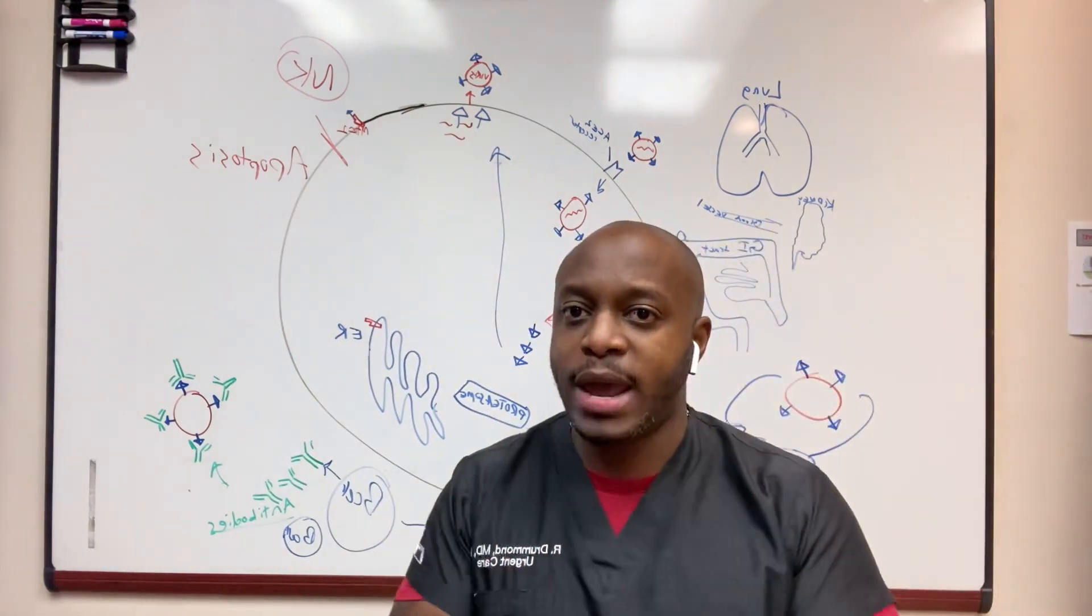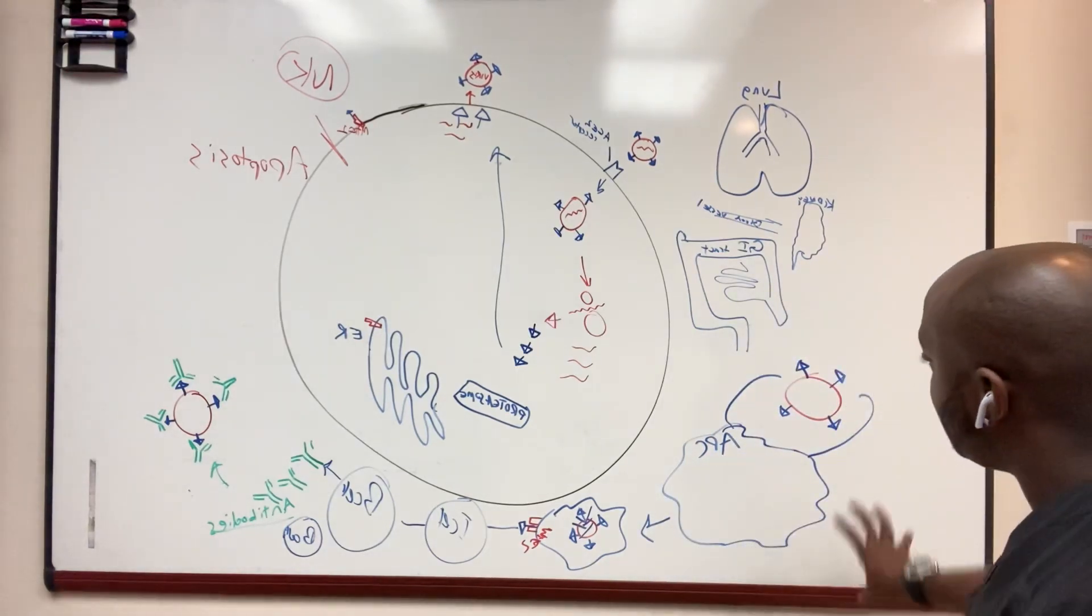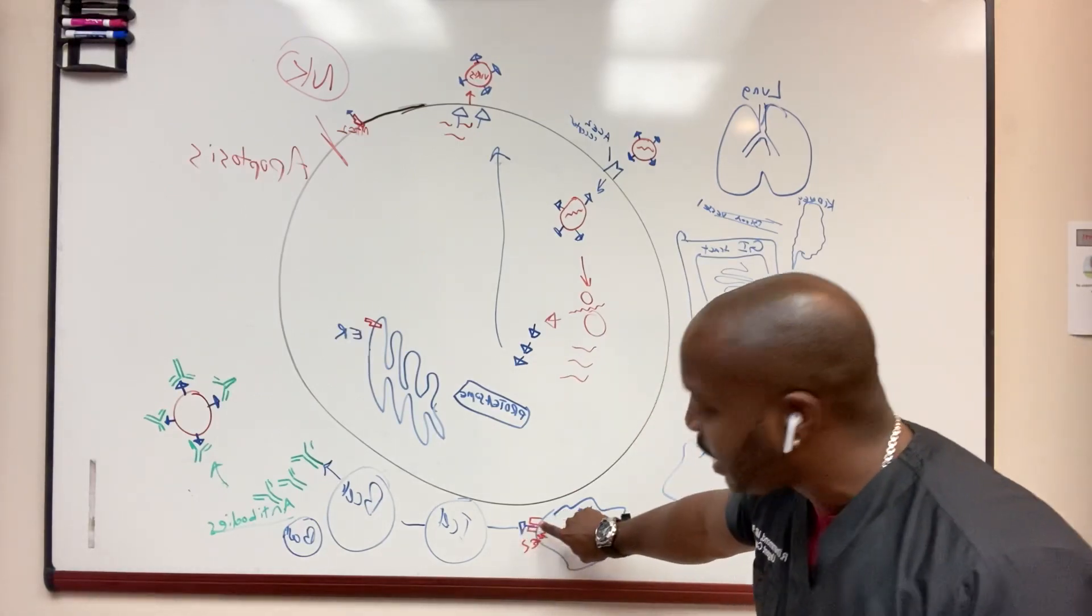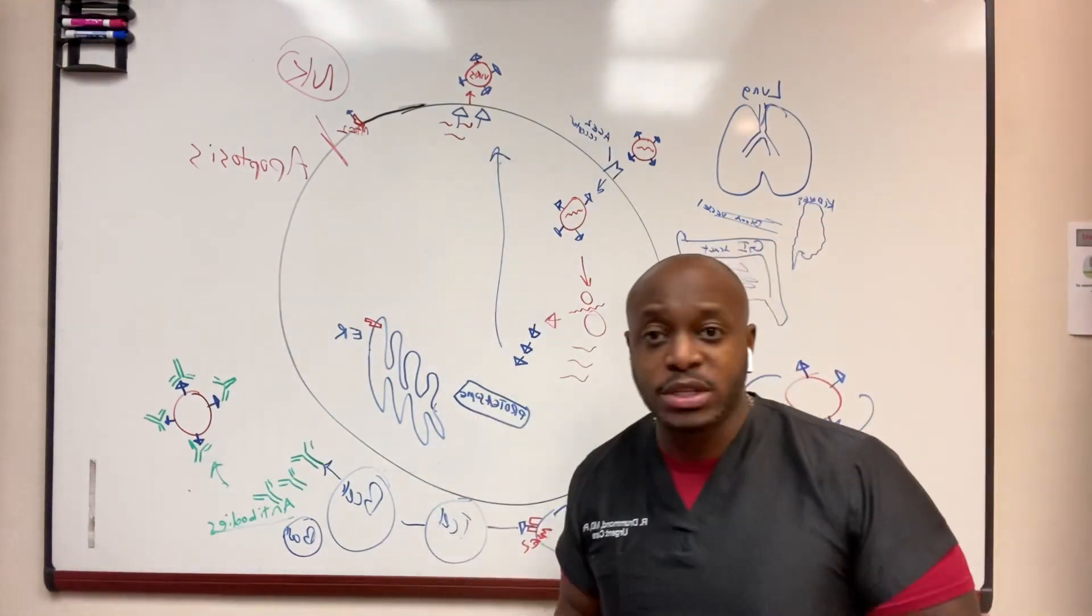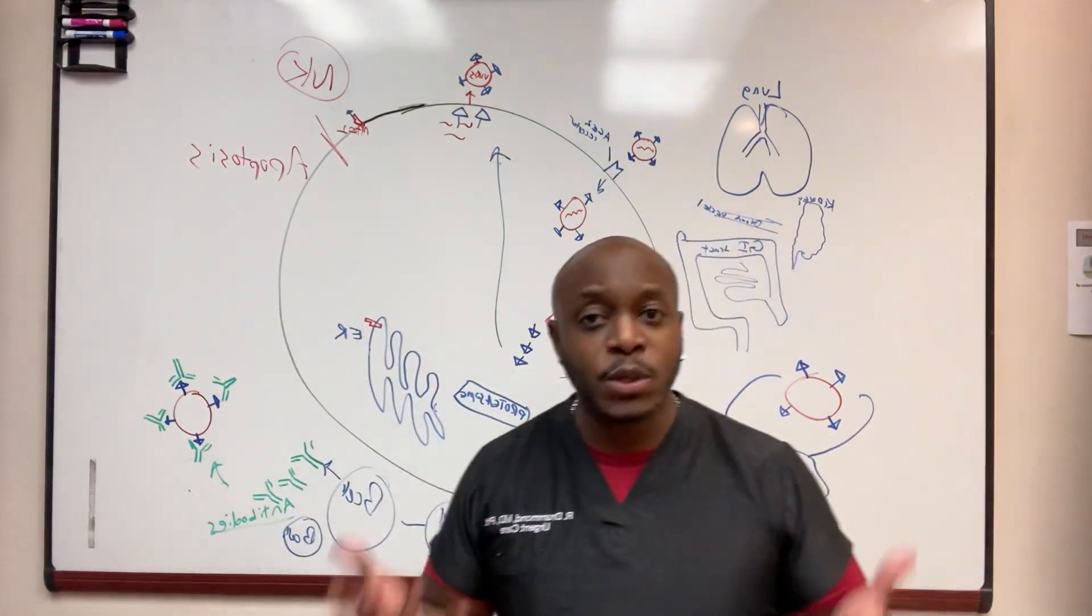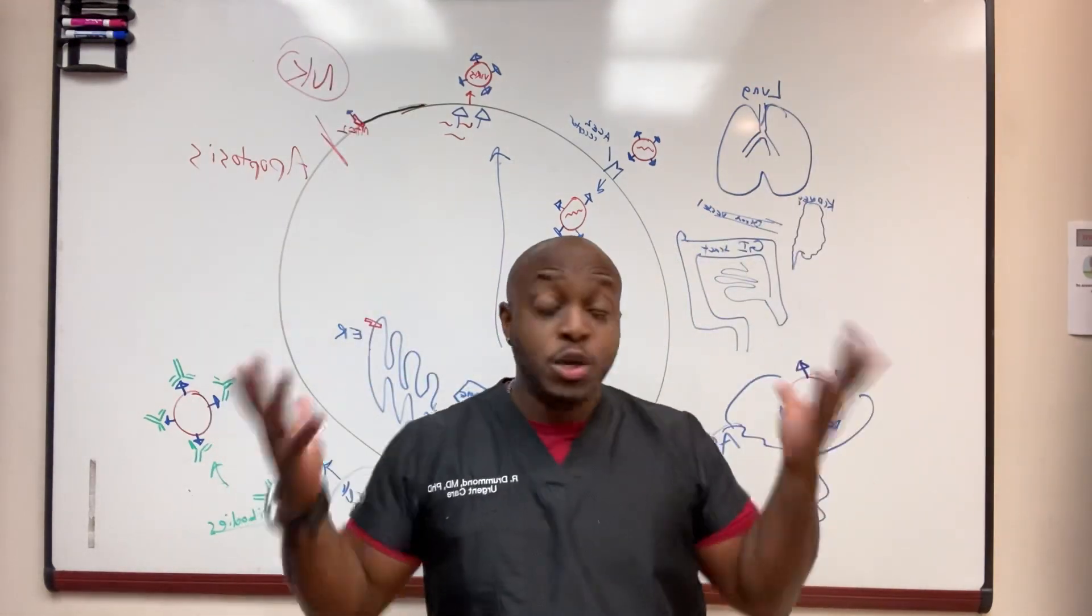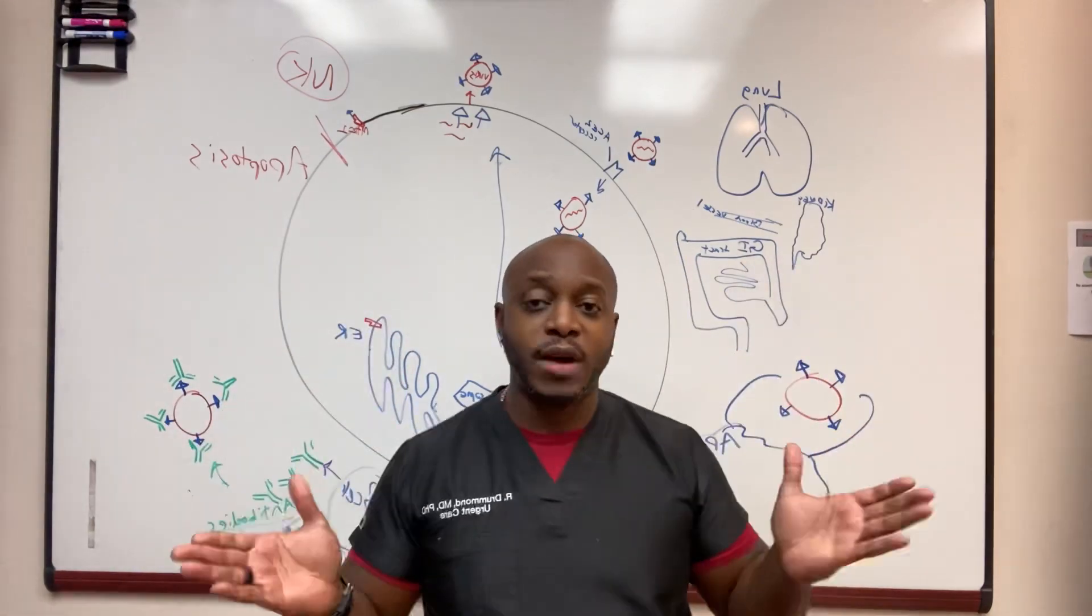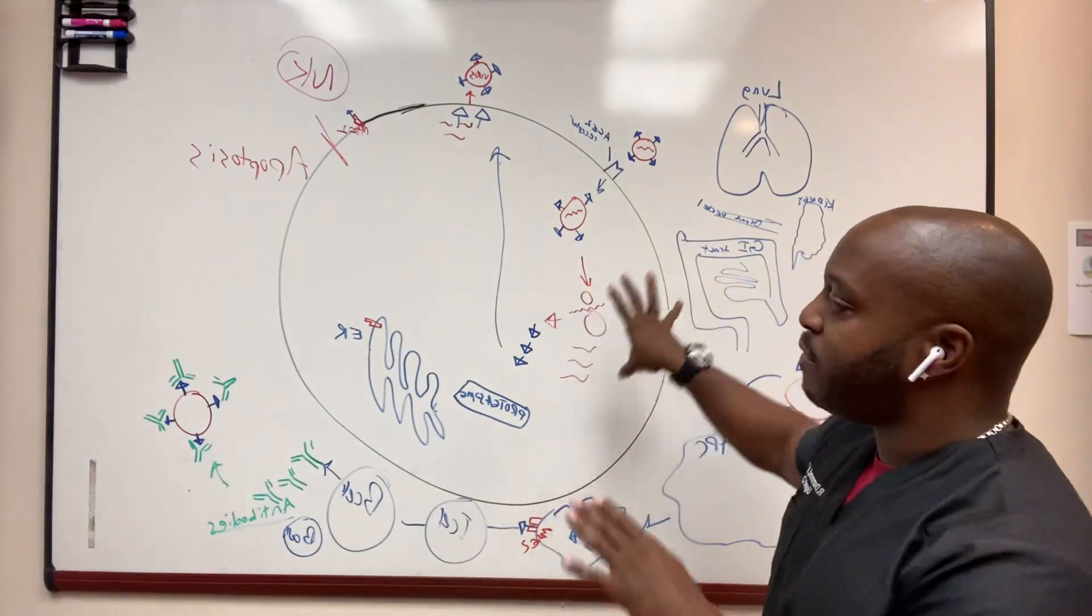Now, the thing I want to point out is that when this macrophage or Pac-Man engulfs the virus, chops it up, and presents those pieces on the surface, it's presenting every part of the virus. Some of it is spike protein, some of it is capsid protein, some of it is RNA. So it's going to make antibodies towards all of those. Some of those antibodies are useful, some are not. So it's going to basically end up utilizing our entire immune system, our entire defense system, towards parts of the virus that may or may not be necessary. But that's what's happening in the course of a natural infection.